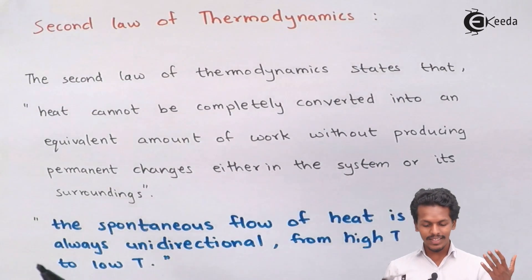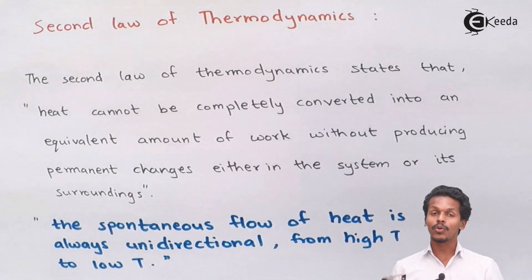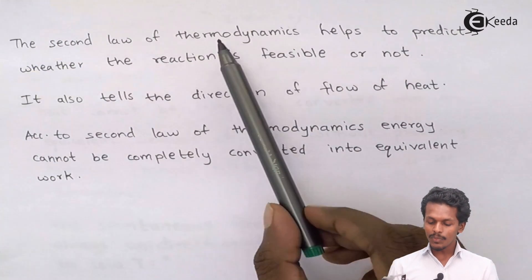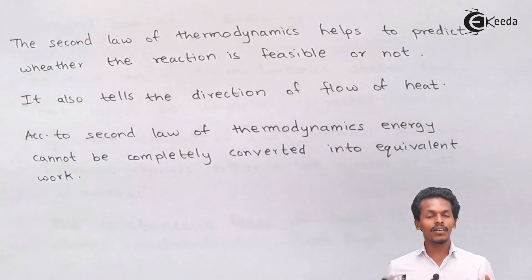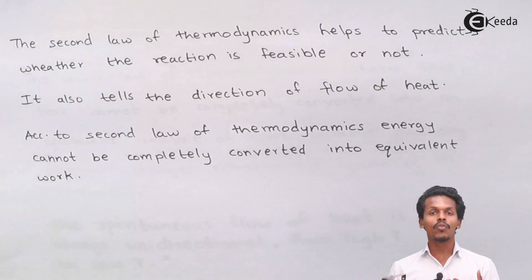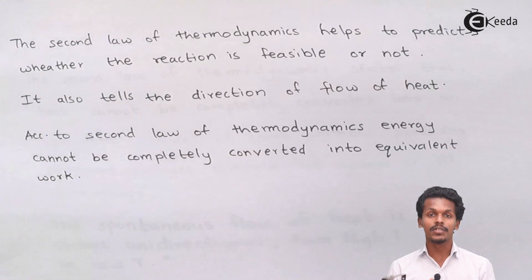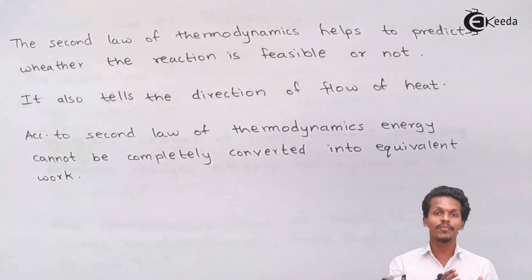Let us explain the second law of thermodynamics with a few examples. The second law of thermodynamics helps to predict whether a reaction is feasible or not. It also gives us information about whether a process will proceed spontaneously — that is, whether it can move on its own or how easily the process will move from one form to another form.